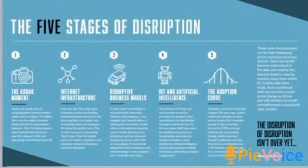The next heading is the stages of disruptive technology. There are 5 stages: the first is the Kodak moment, second is internet infrastructure, third is the disruptive business model, fourth is IoT and artificial intelligence, and the fifth and last is the adoption curve.